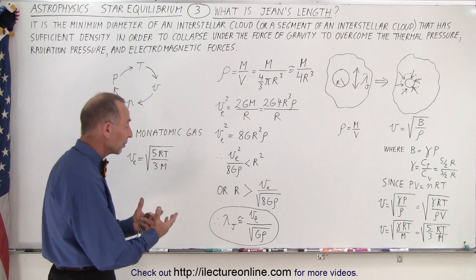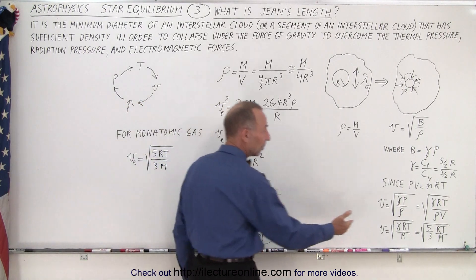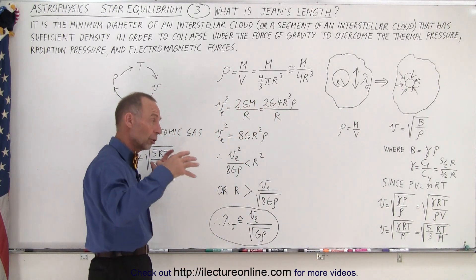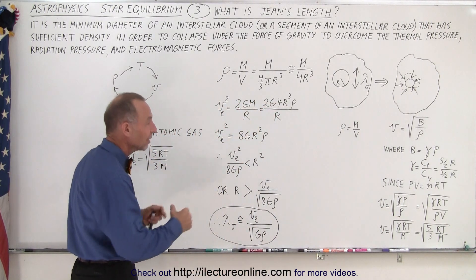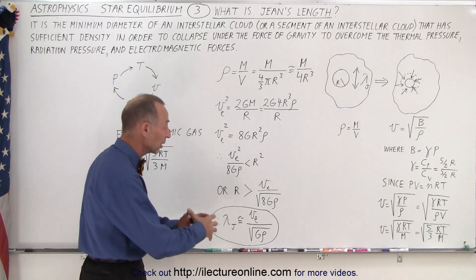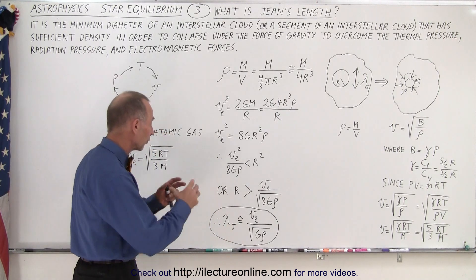Now of course we have to remember that the escape velocity is going to depend on the temperature of the cloud. So at higher temperatures you need larger mass, a larger Jeans length. For smaller temperatures, very cold temperatures, you don't need nearly as large of a mass in order for it to collapse.